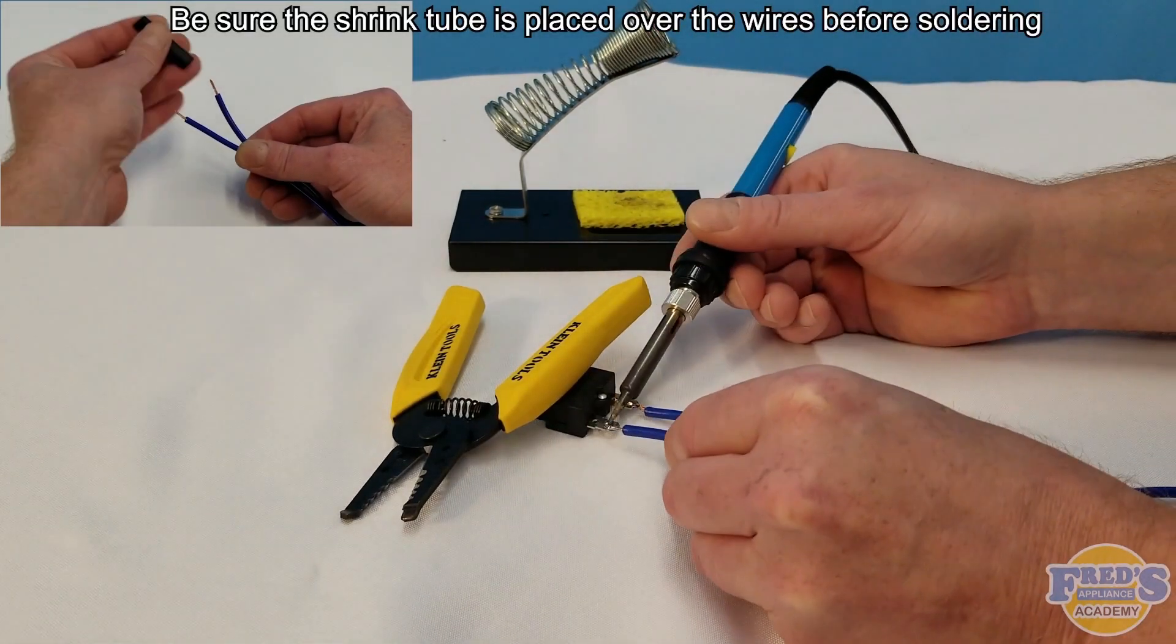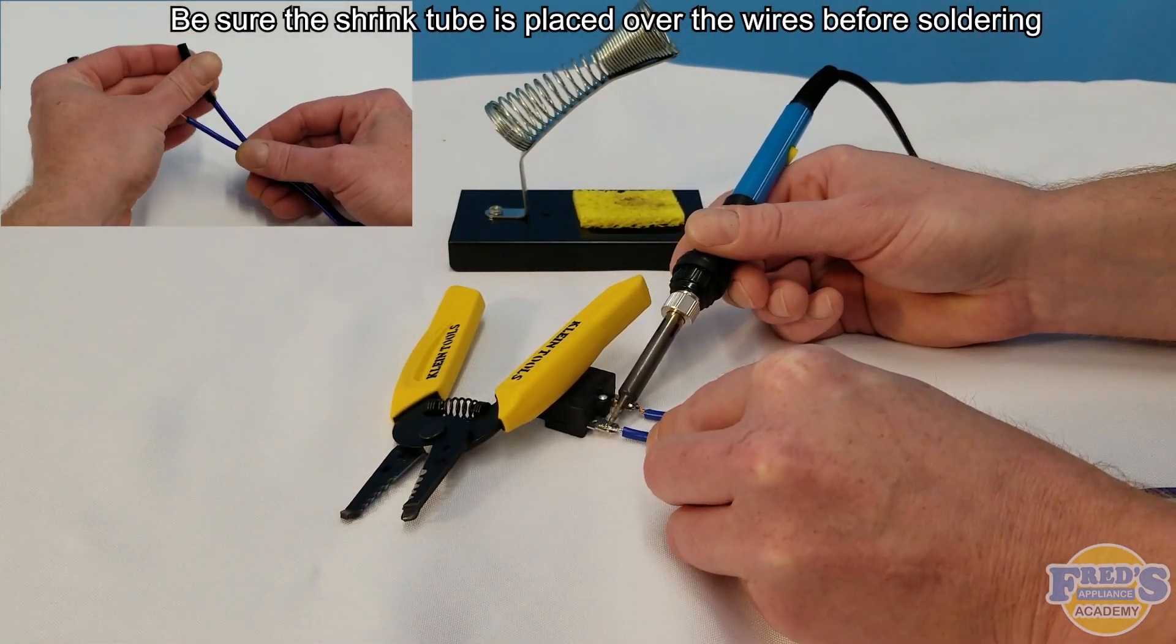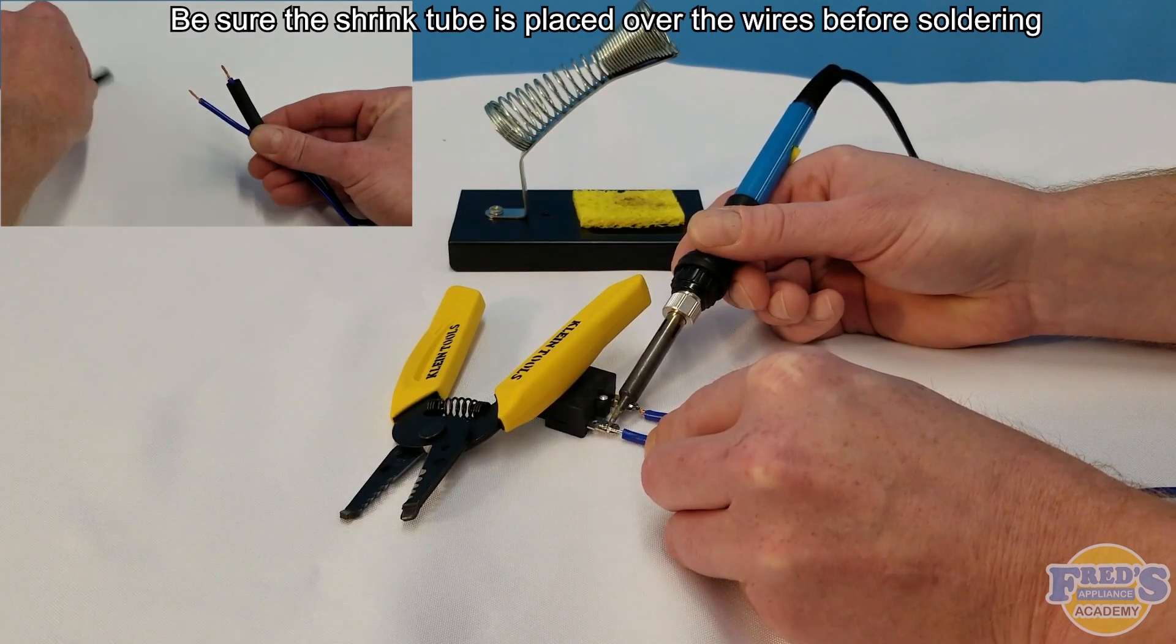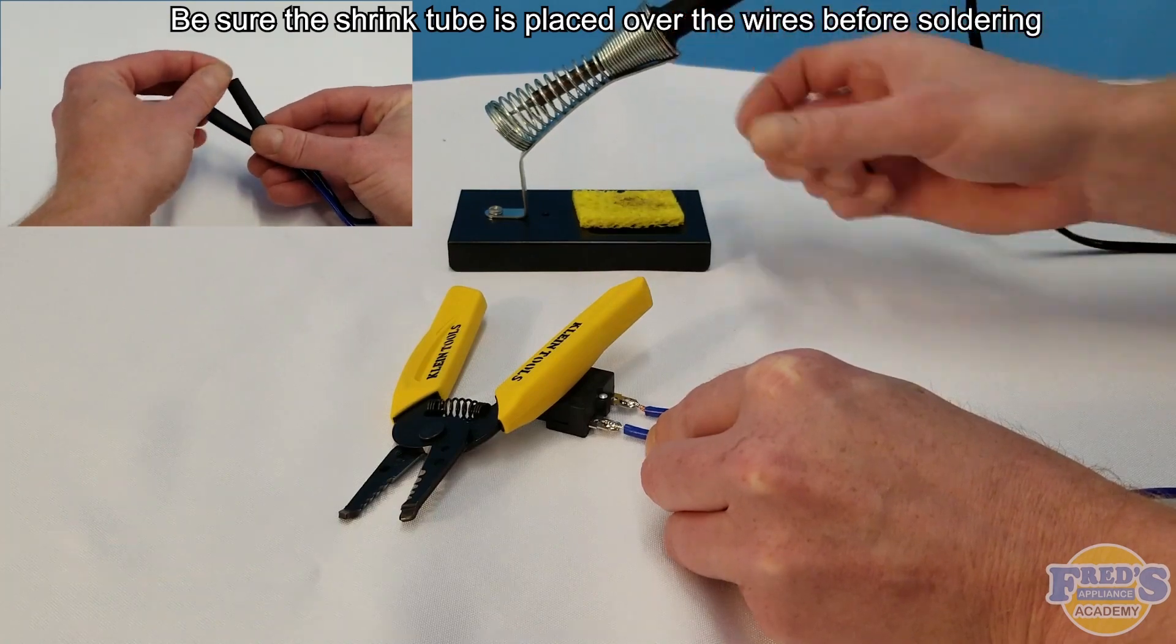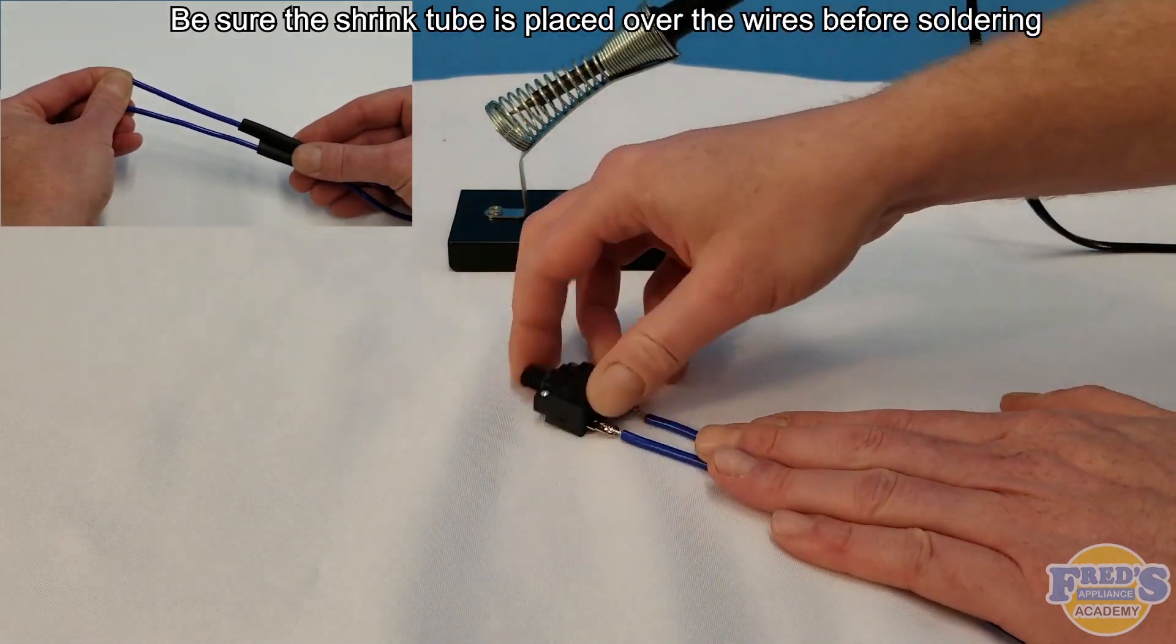I should advise you that before you start this process you're going to need to take the shrink tube you saw in the beginning of the video and slide it down over the wiring. Failure to do so will result in you having to unsolder your connections.